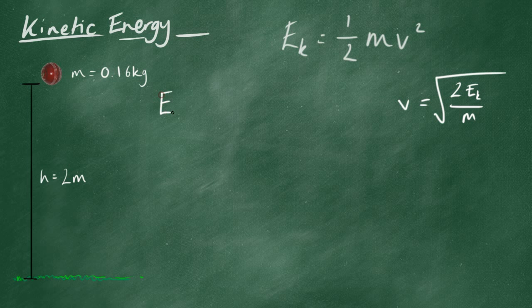And the equation for gravitational potential energy is mass times gravitational field strength times height. So, let's do that quickly. Mass of the cricket ball was 0.16 kilograms. Gravitational field strength is always 10 on Earth. And the height, we've raised it, as you can see, is 2 meters.